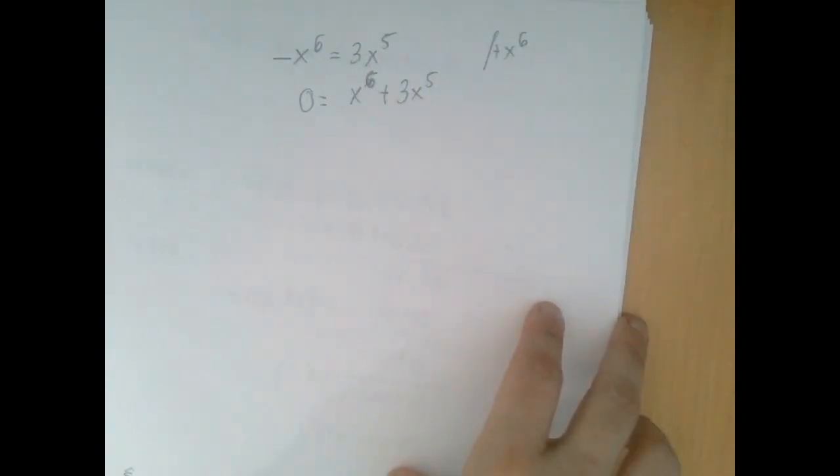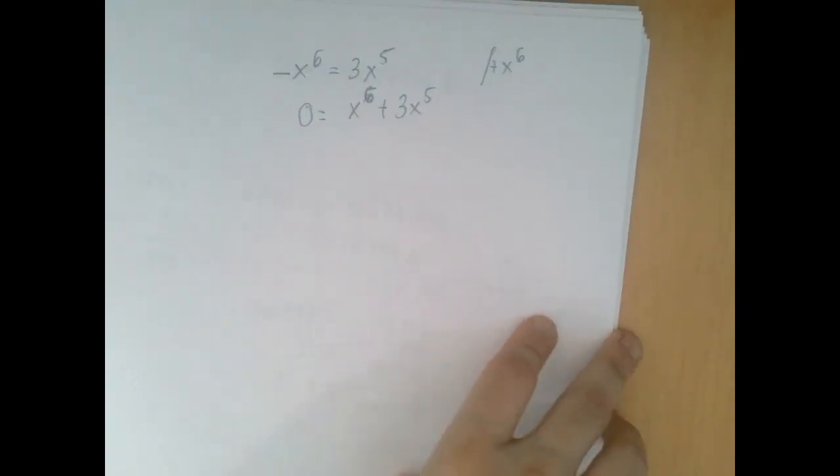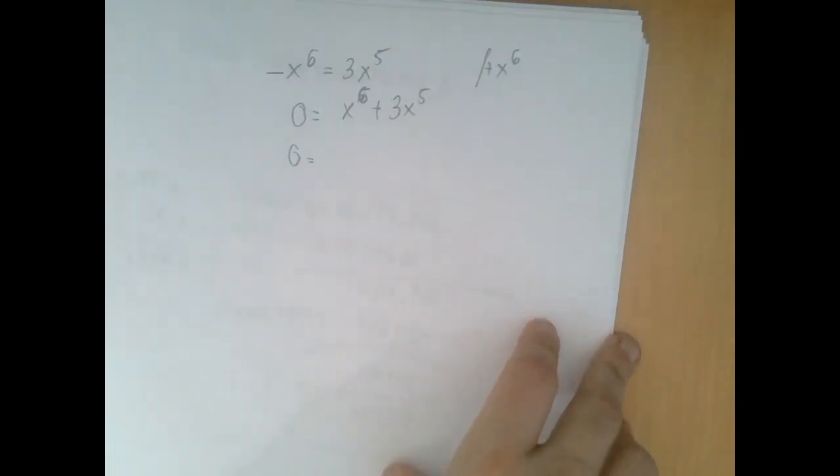Now we're going to factor the expression on the right-hand side. So that is a quite big GCF, right? Both x to the sixth and three x to the fifth are divisible by x to the fifth.